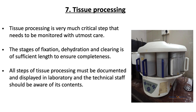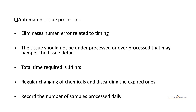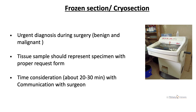After grossing, we move to tissue processing, which is a critical step that must be monitored. The stages of fixation, dehydration, and clearing must be of sufficient length to ensure completeness. All steps must be documented and displayed in the laboratory, and the technical staff should be aware of these. The automated tissue processor requires a total time of 14 hours. Chemicals should be regularly changed, expired ones discarded, and the number of samples processed daily should be recorded.